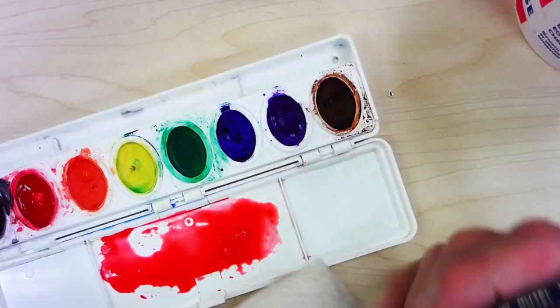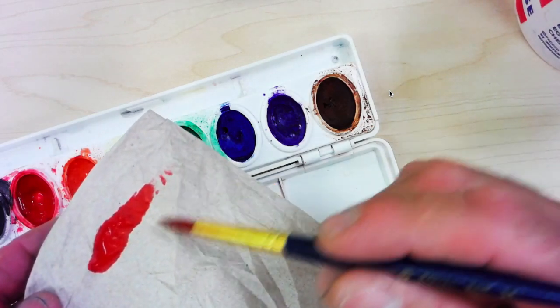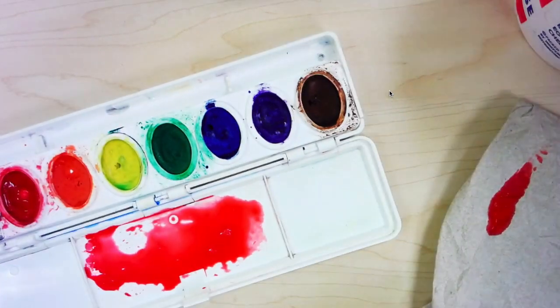Now that the tray is loaded, you want to test out your pigment first, your color. So take your paper towel and you're just going to wipe it, test out that color. If you think it's good then you can move on to painting.